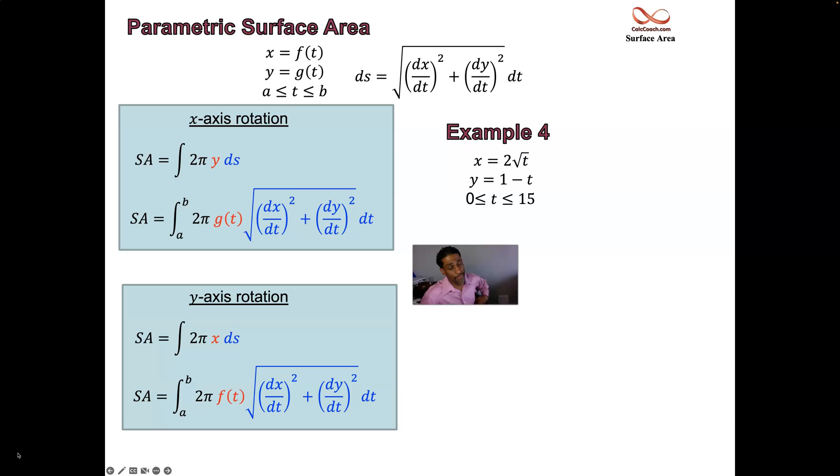Let's look at an example. So x = 2√t, y = 1 - t, and we're going for t's between 0 and 15. You don't have to have a graph, but it's helpful to have a sketch to make sure you understand what's going on with the curve. When t is 0, at least know the end point. When t is 0, you'll have x is 0 and y is 1. You'll be on the y-axis.